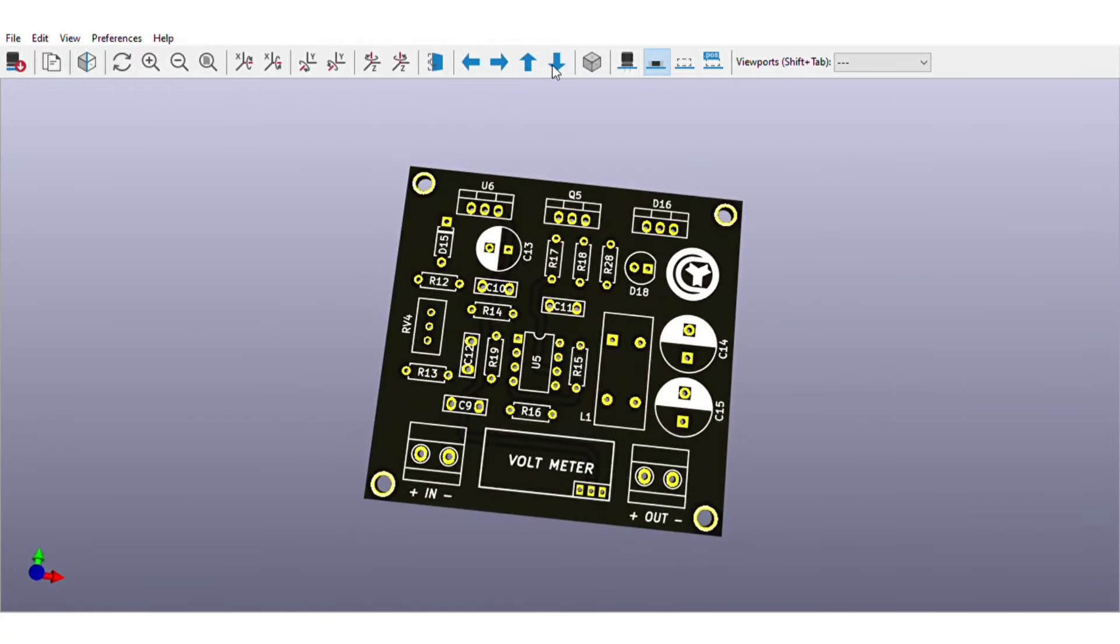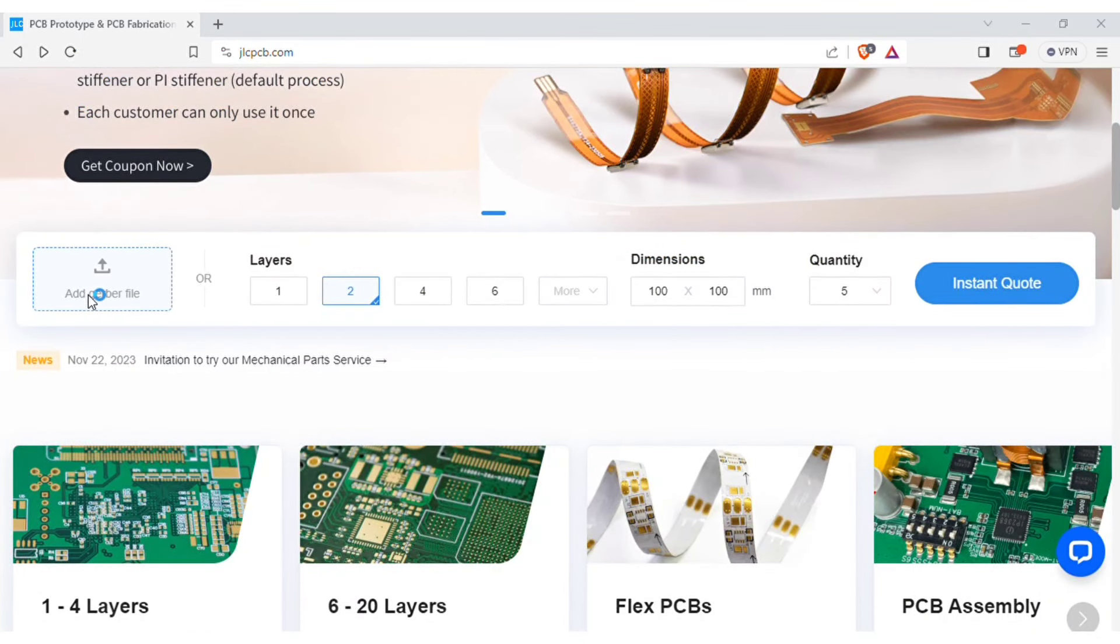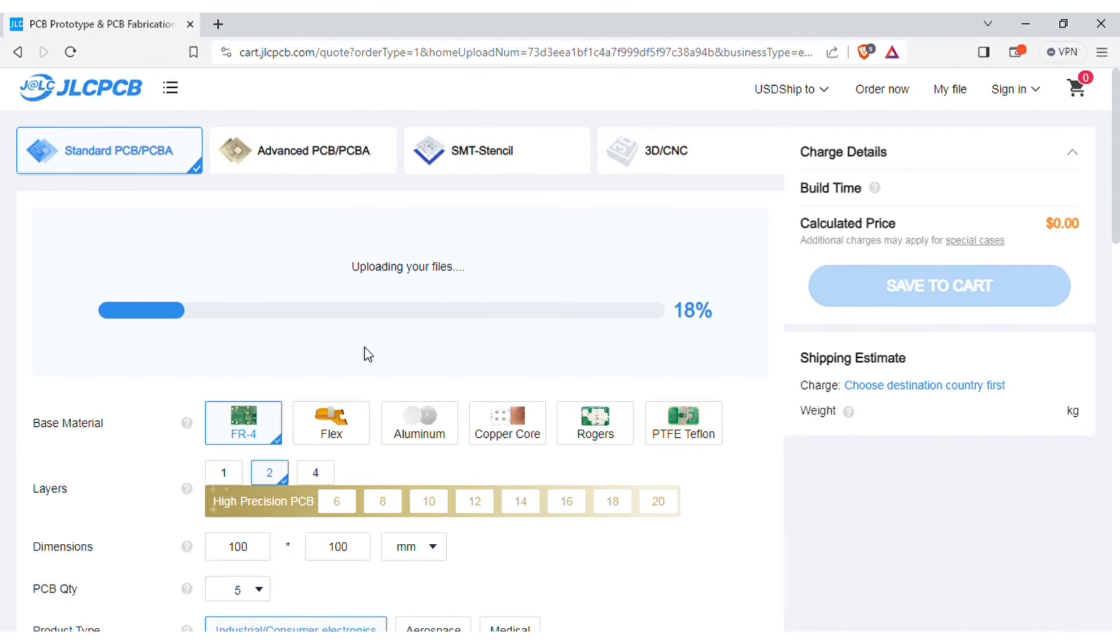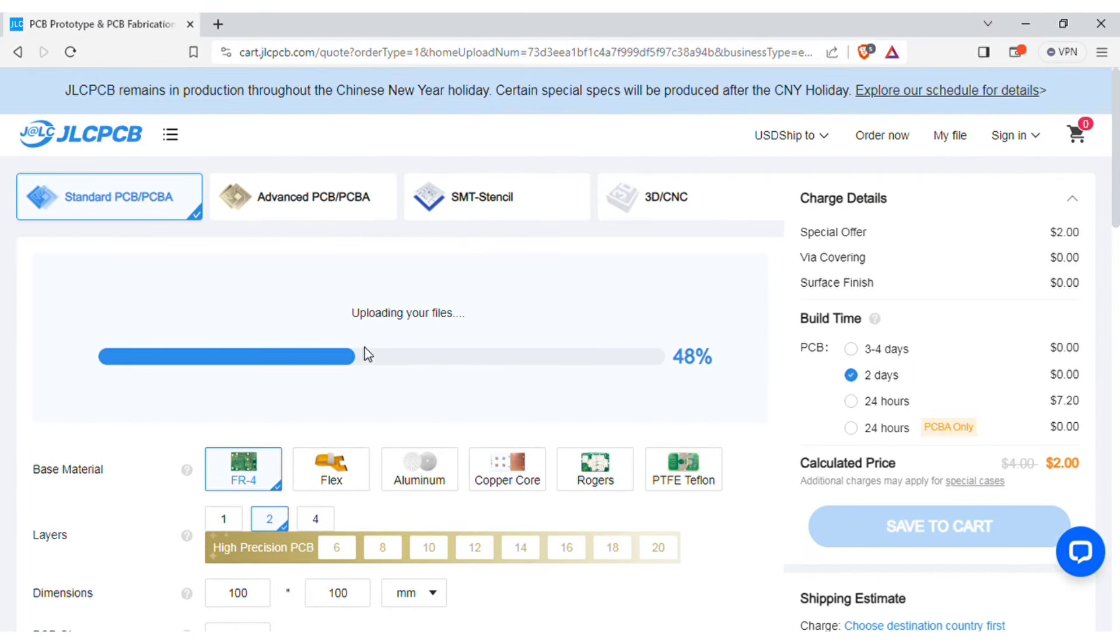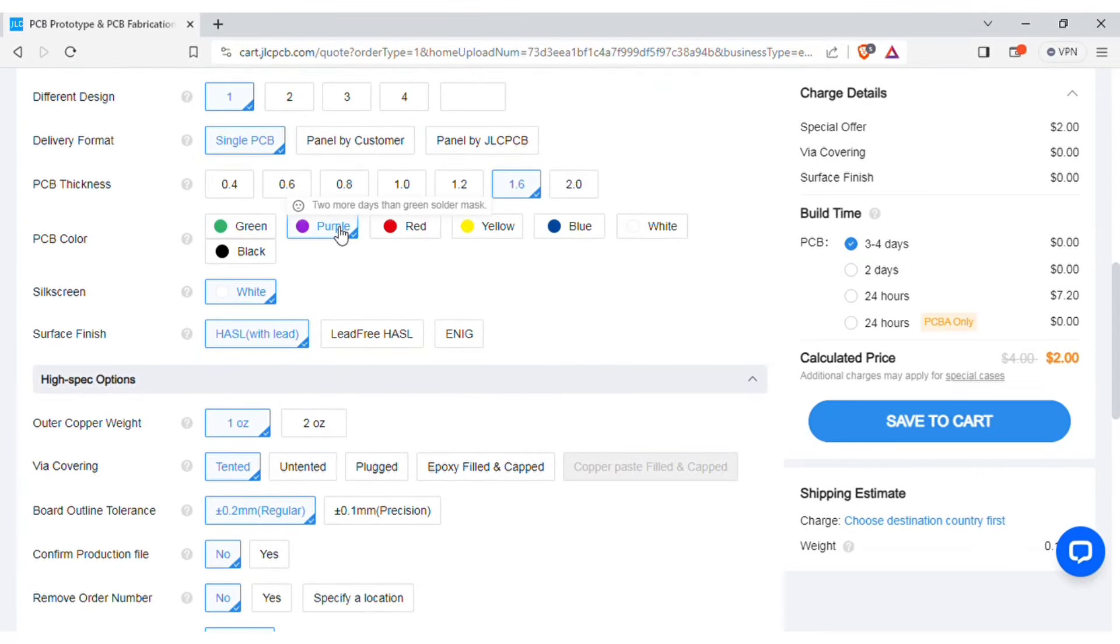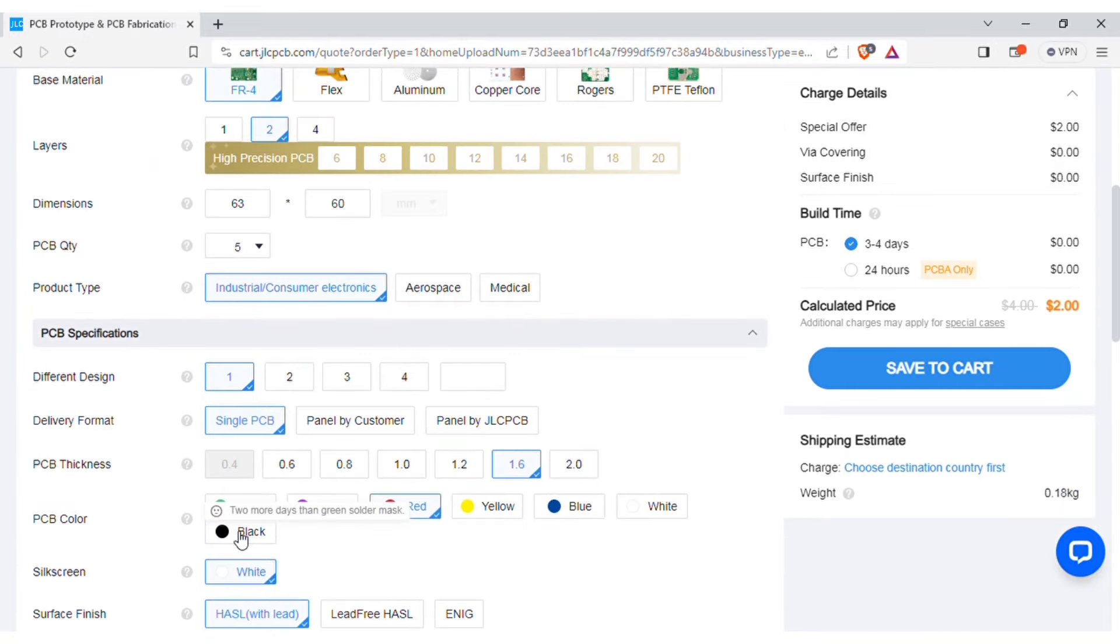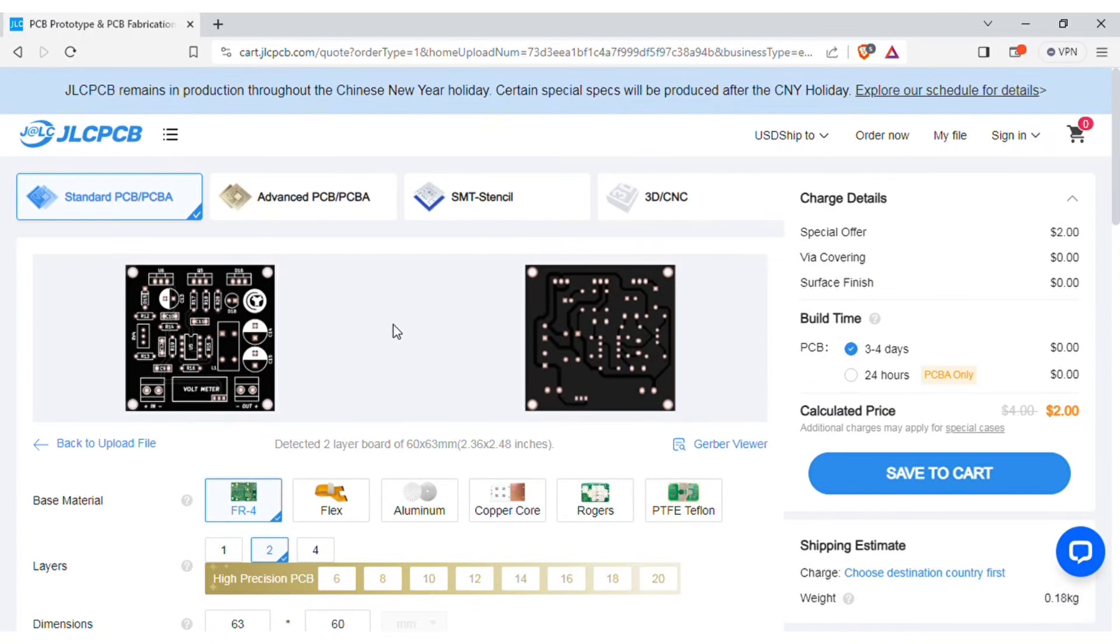In order to manufacture this PCB, visit JLCPCB.com. And here you can add the Gerber file I provided. After uploading, you can see the preview of the PCB. You can also change quantity and the color of PCBs as per your requirements. And then save to cart for checkout.